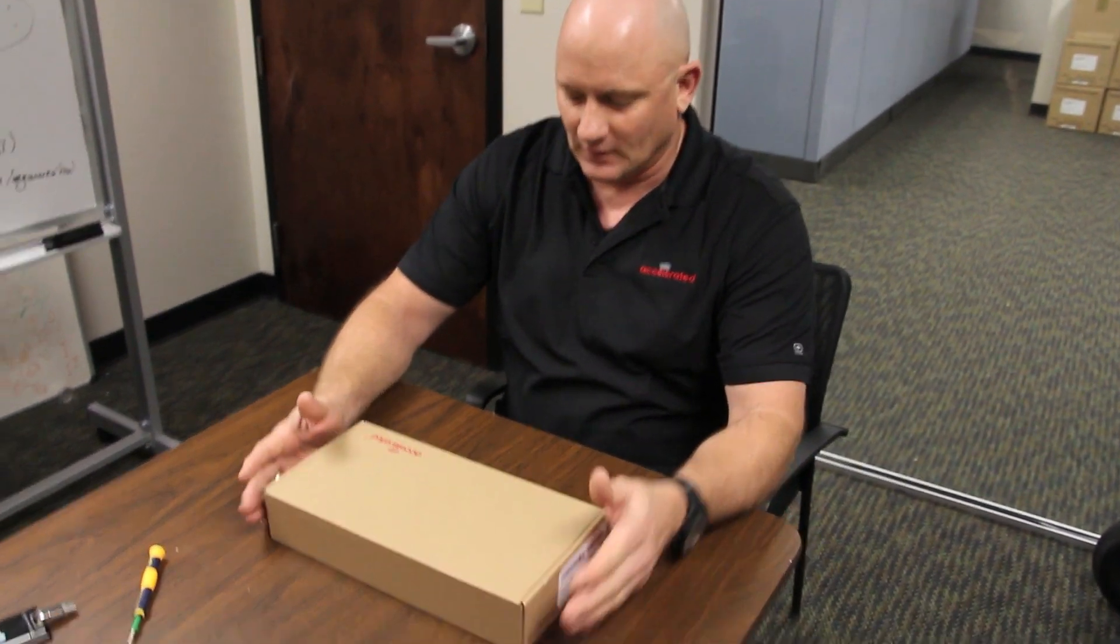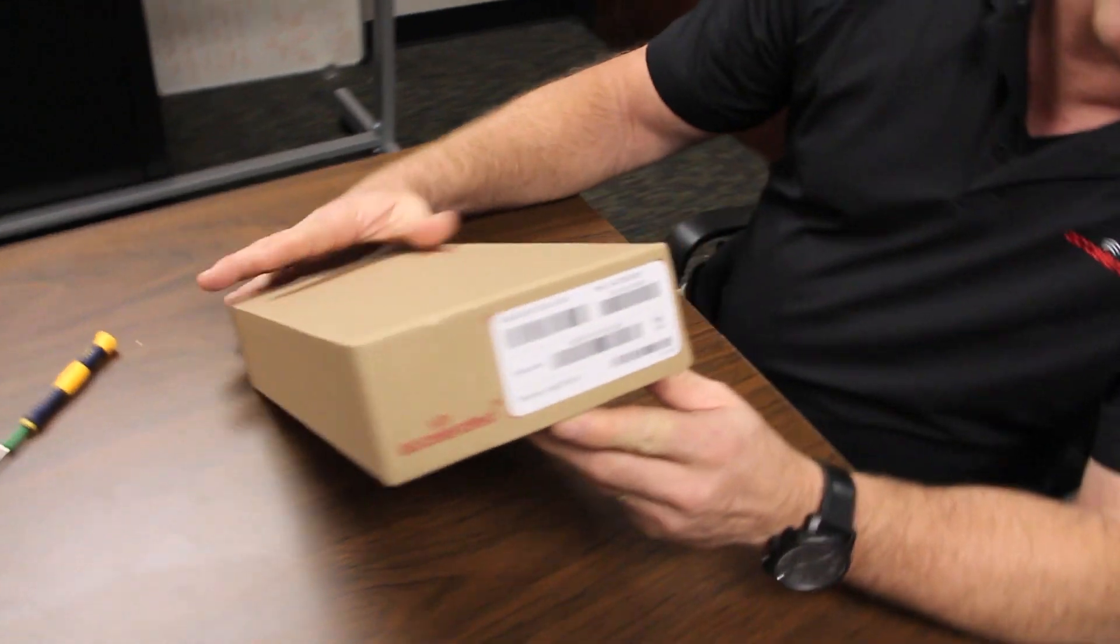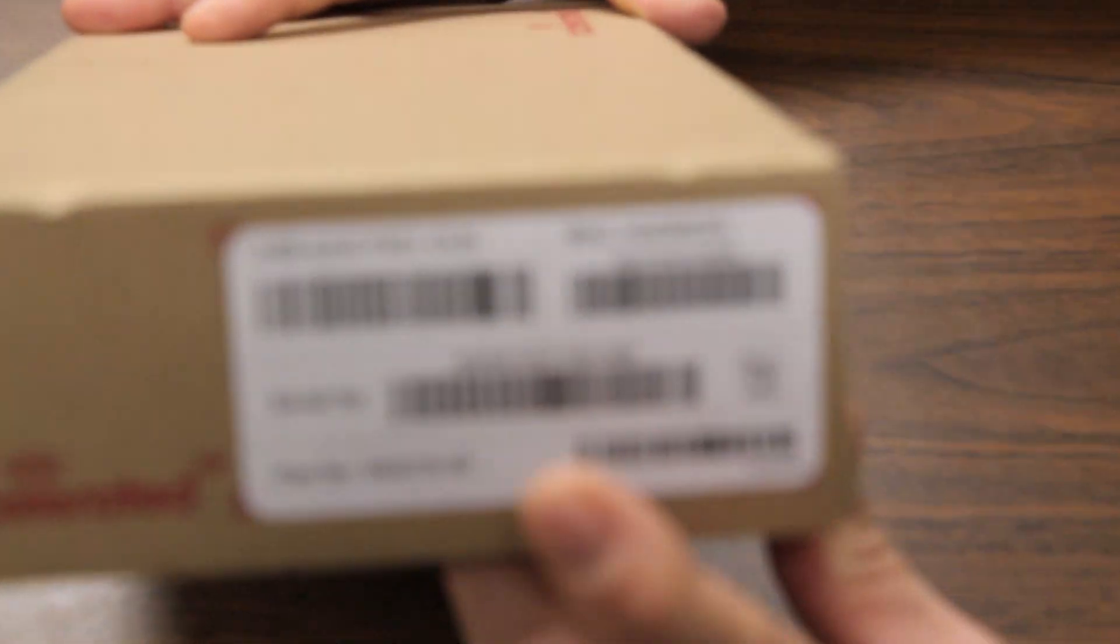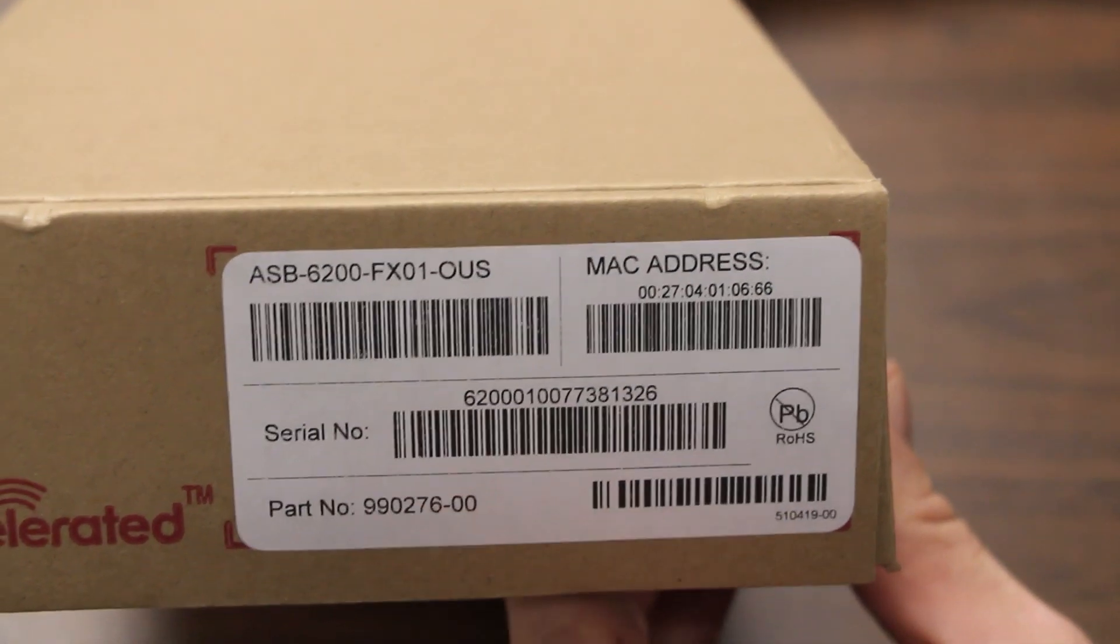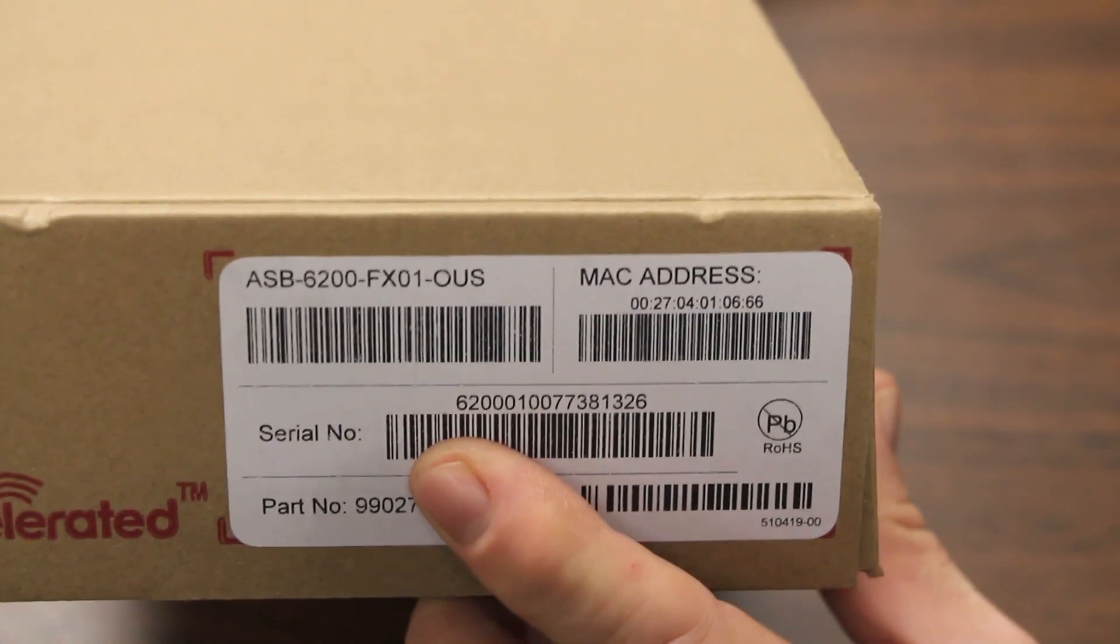Let's start by unboxing the unit. If you look at the box, you'll notice we've got serial number, MAC address, everything associated with the device and also barcodes for ease of tracking.